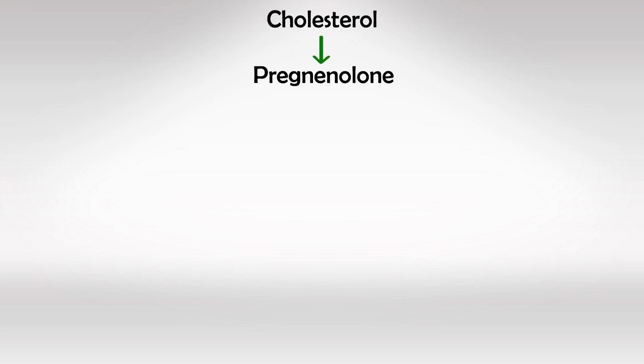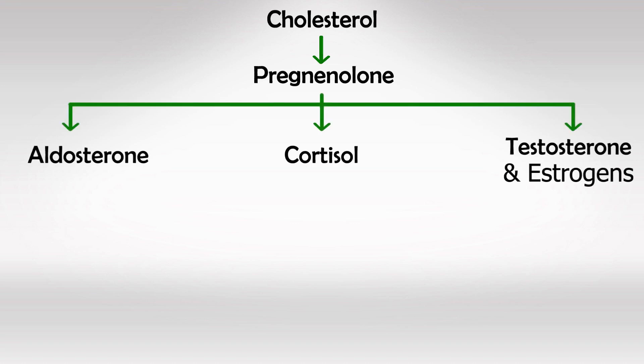The first step is always the same: the conversion of cholesterol into pregnenolone. Depending on the body's physiological need, the pathway can go to the right, the middle, or the left. The right pathway synthesizes sex hormones, the middle synthesizes cortisol, and the left synthesizes aldosterone.